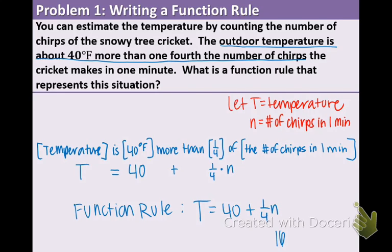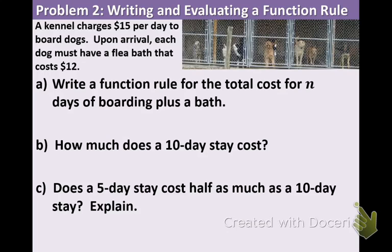That is a real-life situation. Now we're going to go on to example two. This time it's about dogs. A kennel charges $15 per day to board dogs. Upon arrival, each dog must have a flea bath that costs $12. So let's underline our key information again: $15 per day and a flea bath that only happens once that costs $12. So what is varying? Our two varying quantities are the total cost and the number of days that the dog is boarding.